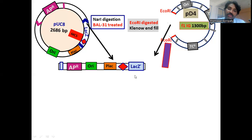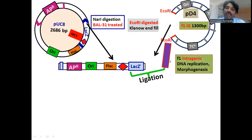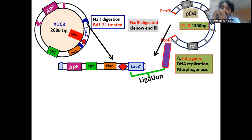The Klenow fragment fills the cohesive ends at the ends of the intragenic region, making them blunt ends. Blunt-ended PUC8 and the blunt-ended intragenic region of F1 are ligated using T4 DNA ligase, giving a molecule consisting of both plasmid and phage DNA.